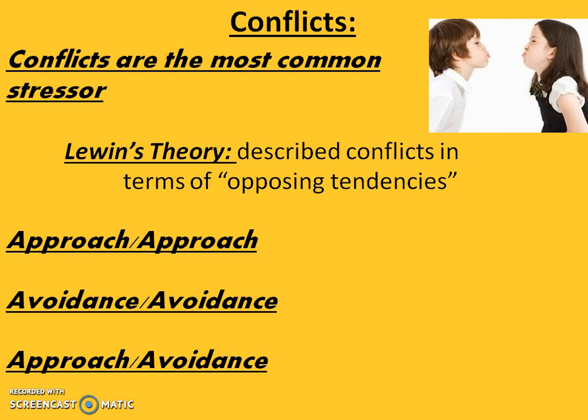The reverse would be avoidance-avoidance conflict, in which the person is confronted by two undesirable or threatening possibilities, neither of which has any positive features. The popular way of expressing this is being caught between a rock and a hard place. When faced with avoidance-avoidance conflict, people usually try to escape the situation altogether. If escape is impossible, they try to select the least threatening option.